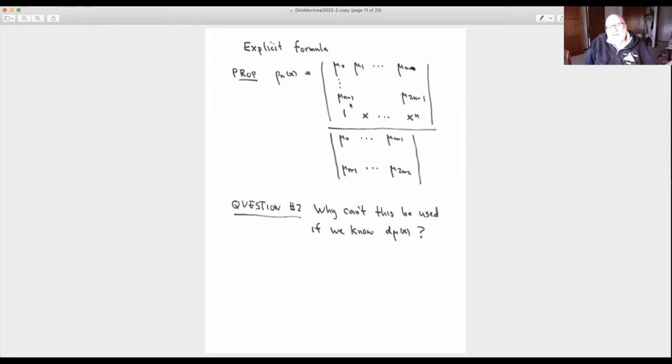And when you do this, Cramer's rule, you'll get this thing right here. So we asked Dick, why can't this be used if we know the measure? If the measure is given, why can't we just use this? And Dick told us, well, he said he knew about that, but he said that never led anywhere. Negative about it all.